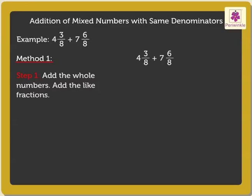Here we add the whole numbers 4 and 7, and the like fractions 3/8 plus 6/8, which is equal to 11 plus 9/8.